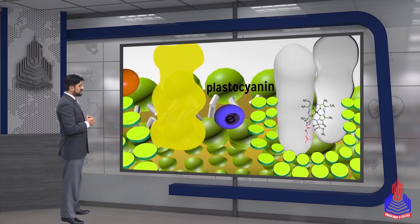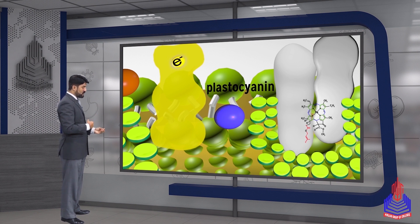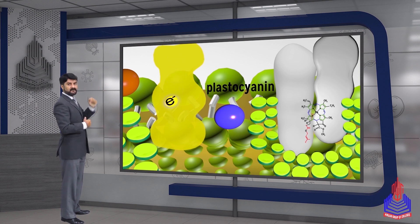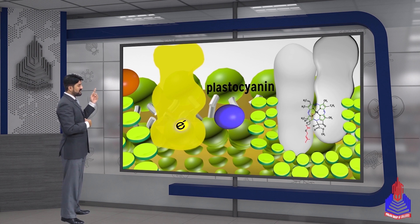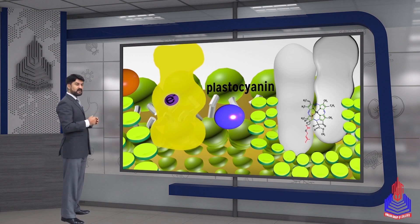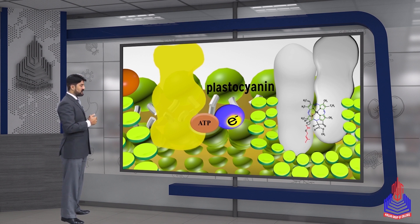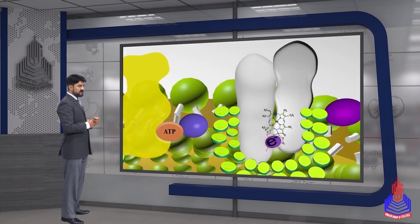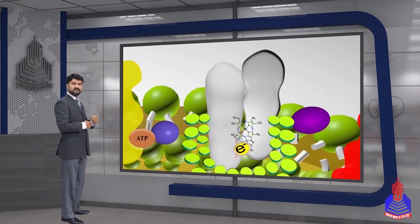We have to understand what energy is — how it moves from low level to high level, and then there is energy loss. Look at this — it is losing energy, and the energy lost is used for the formation of ATP. Then, where does the electron go? It goes to Photosystem 1.